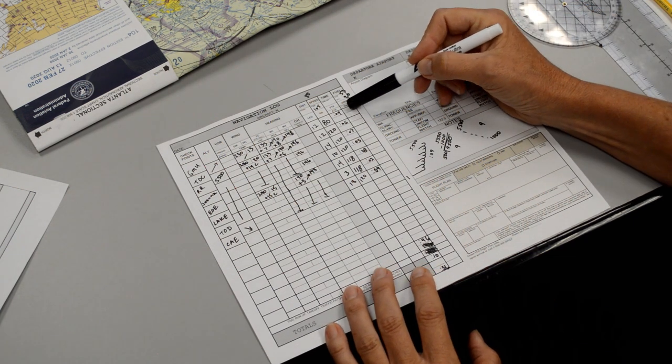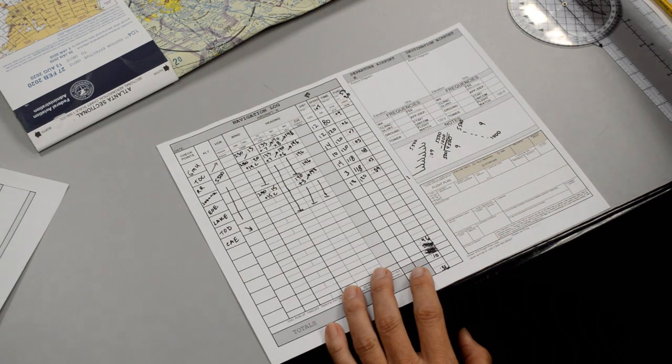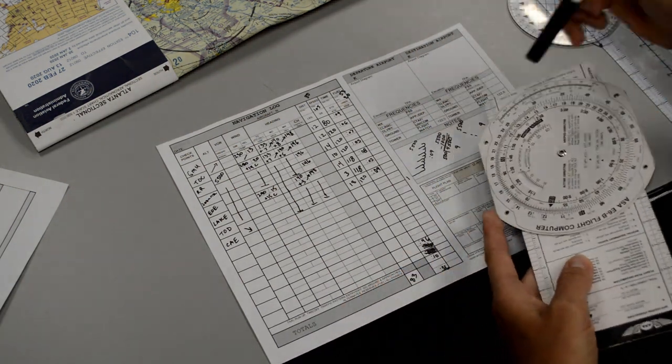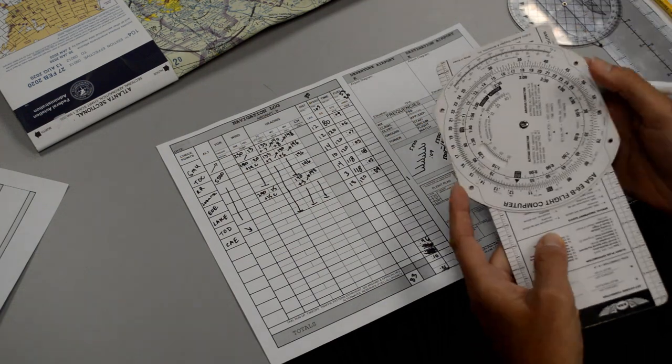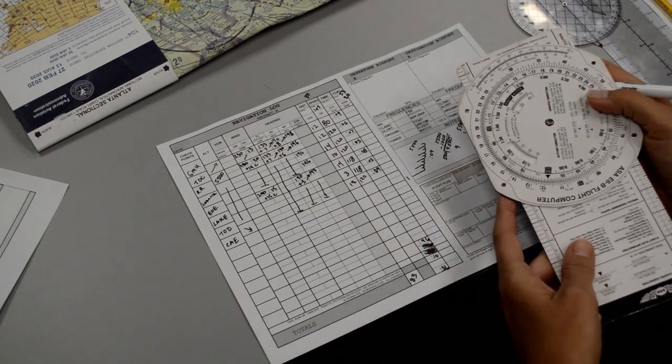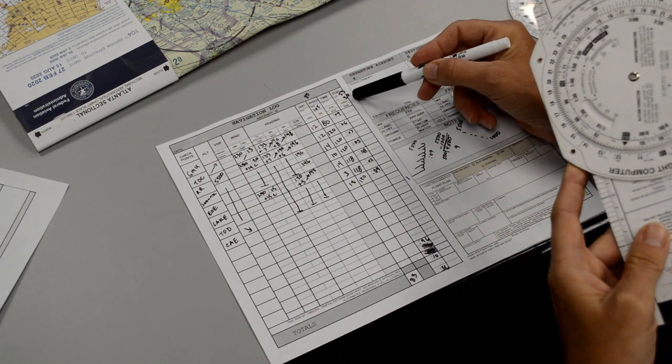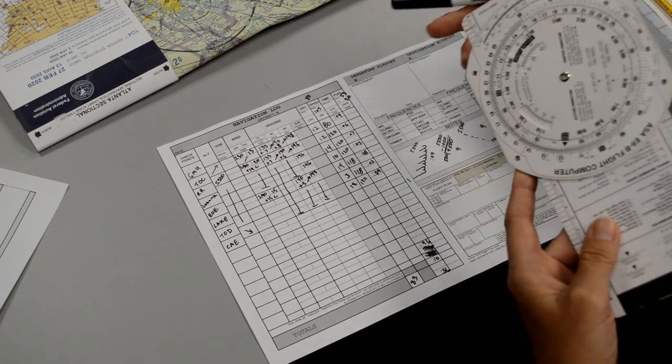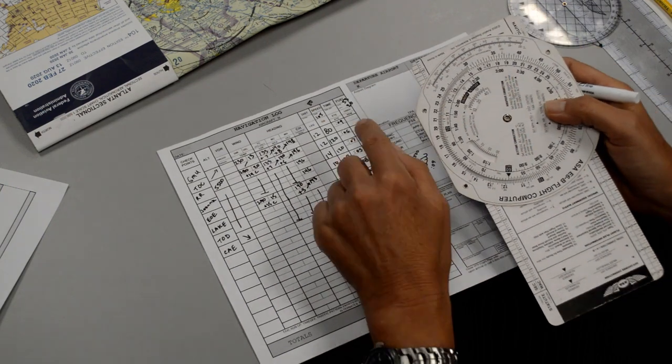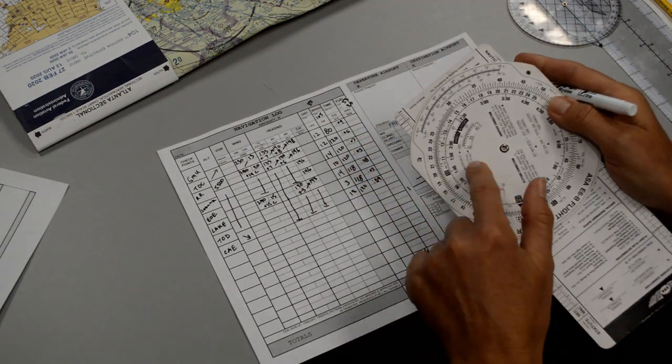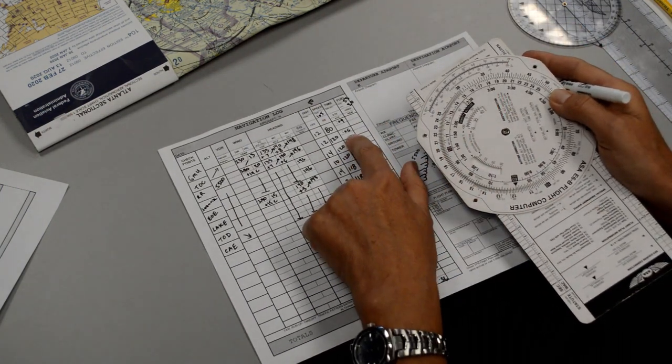Now we have places here that we can fill in and I could calculate out each individual leg how much fuel I'm going to burn. So I'll do just one for an example, but in reality we could just take our total time and then figure it out by gallons per hour. But I'll show you in case you want a little extra practice with the E6B, then let's do this one here.